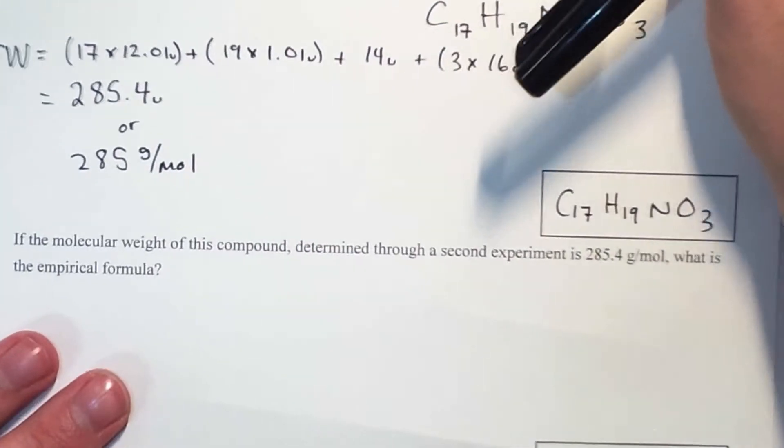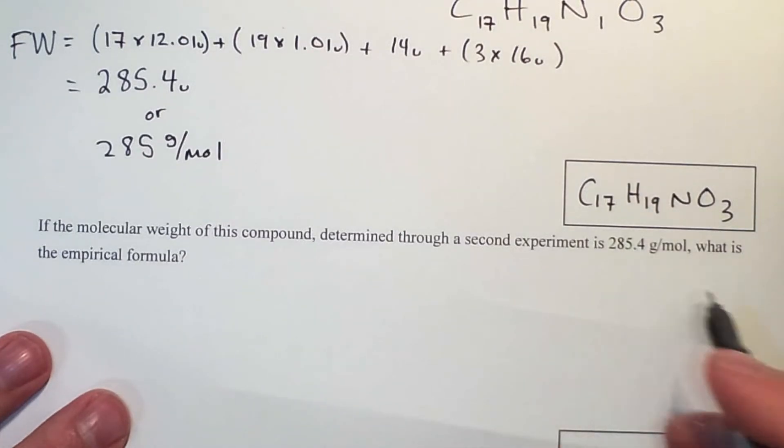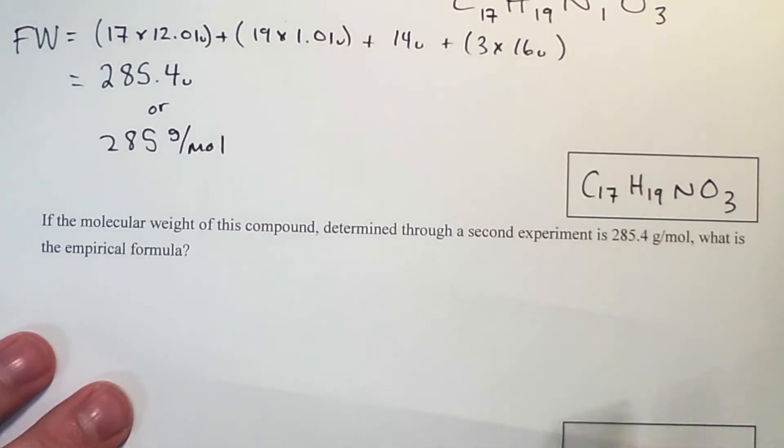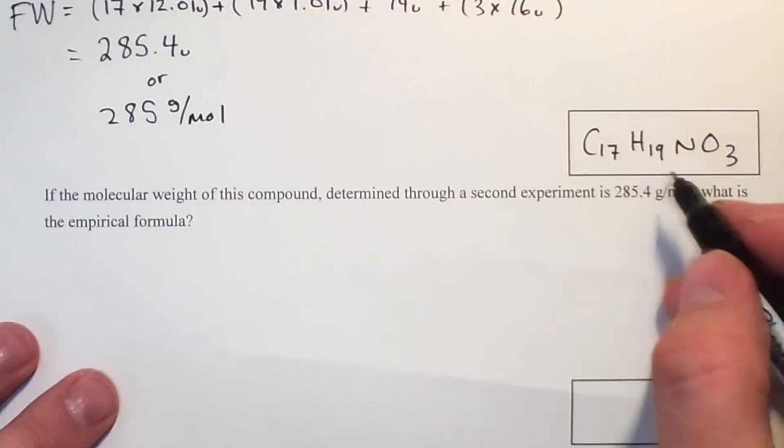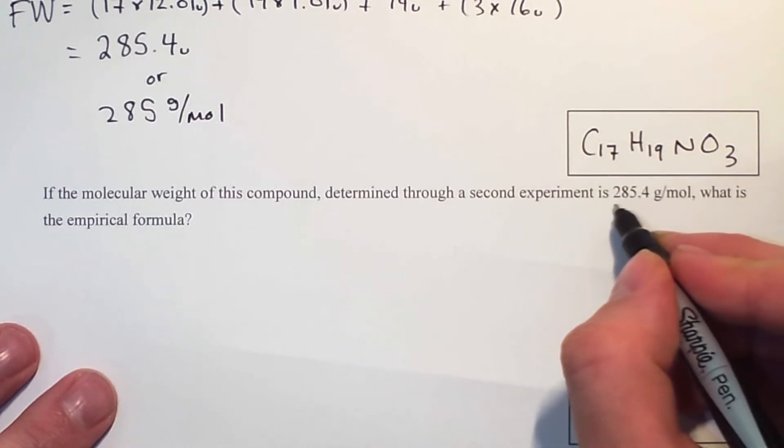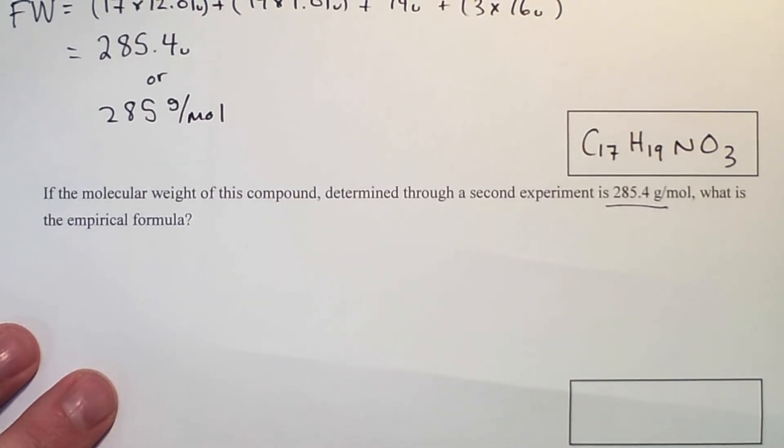The empirical formula is just the smallest whole number ratios of the actual atoms and how they're arranged. We have to do a completely different experiment to get molecular weight. When we get these questions, it says the molecular weight is 285.4.